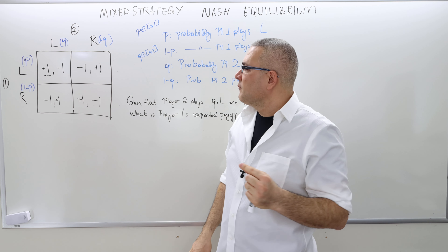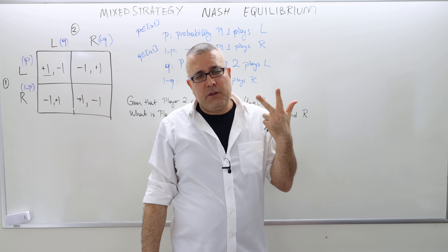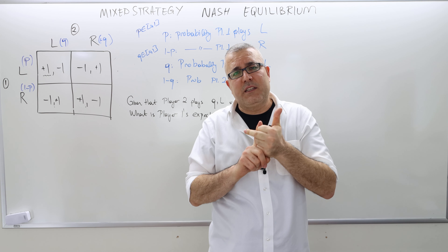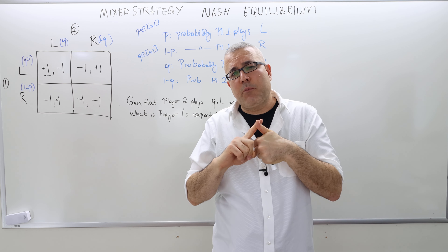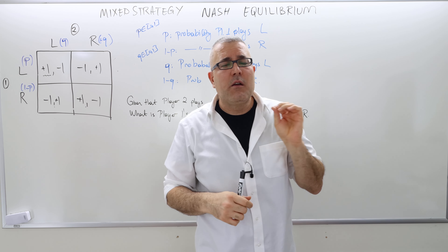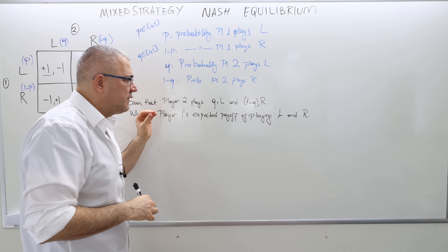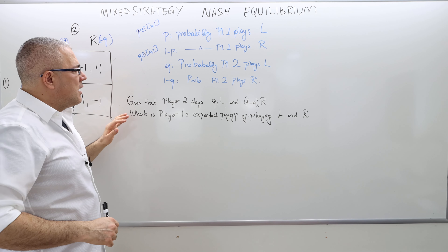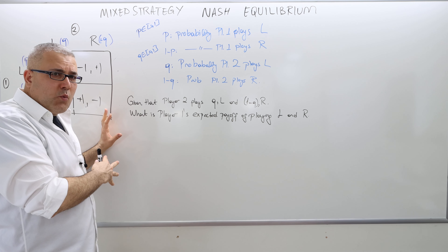To calculate the mixed strategy Nash equilibrium, there are three steps. We can skip step two, but we cannot skip step one and three. Step one is calculating the expected payoffs — this part is very critical. Most of the errors occur at that step. So now I'm going to start with player one.